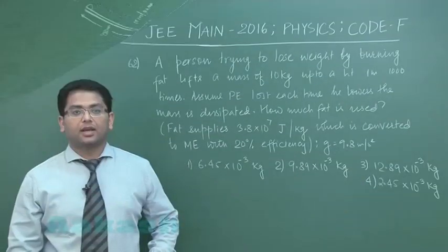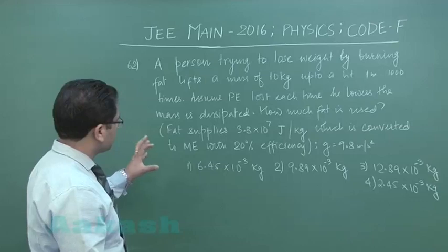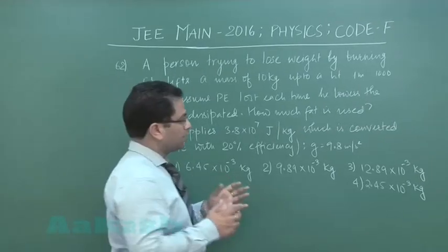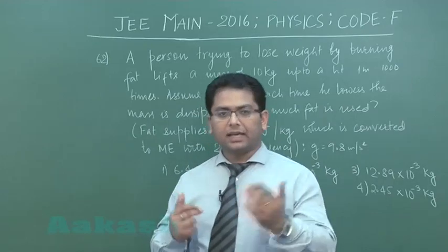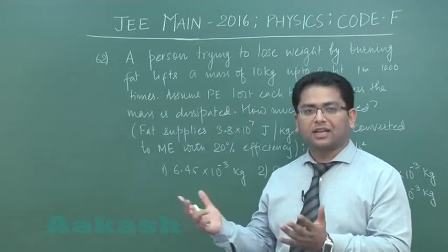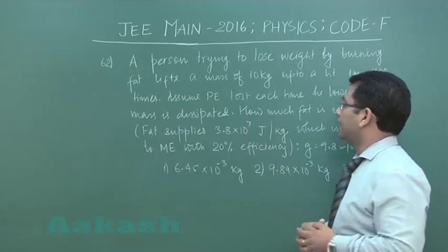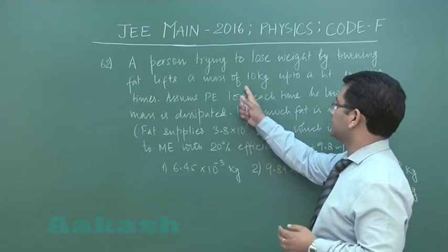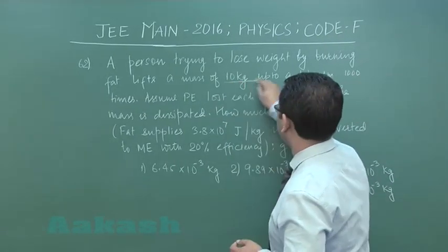Okay, now let us go to question number 62. This question is quite a practical question. It is something related to energy conversion and calculation. It's something like this: a person trying to lose weight by burning fat lifts a mass of 10 kg up to a height of 1 meter, 1000 times.